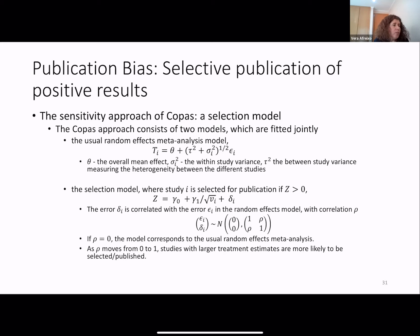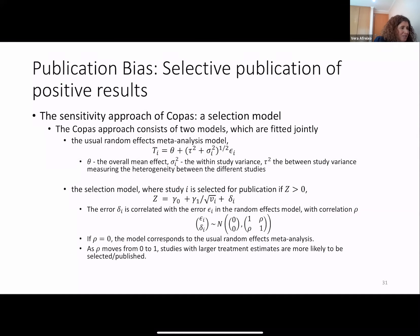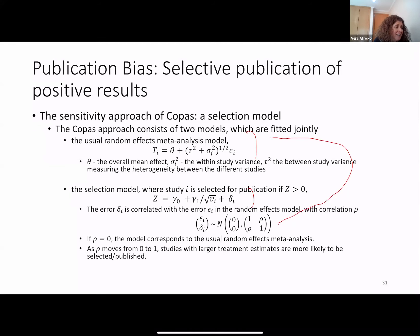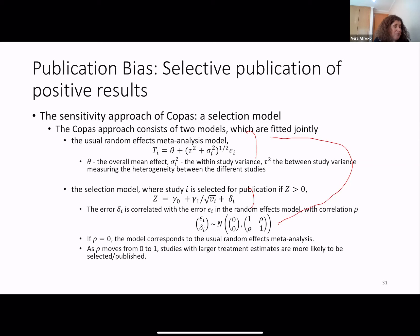The Copas selection model is a joint modeling approach. We have two models: the usual random effects model and another related to the selection process. These two models are related by the correlation between both errors. If the correlation is zero, we have the traditional random effects model of meta-analysis. If we have some correlation, we have some publication pressure through the publication bias.